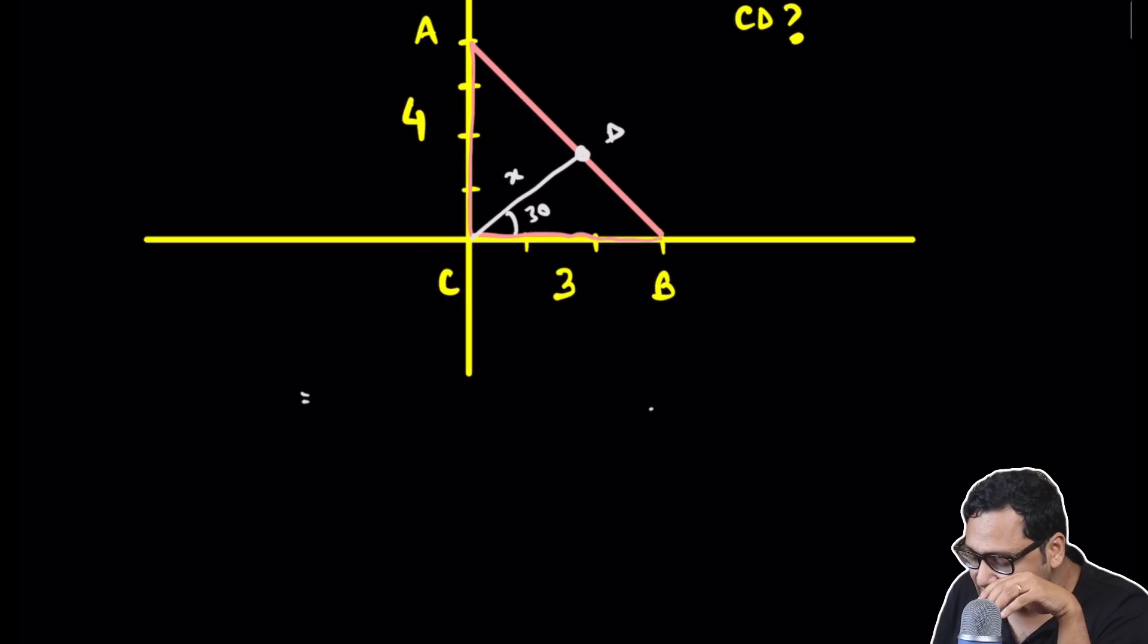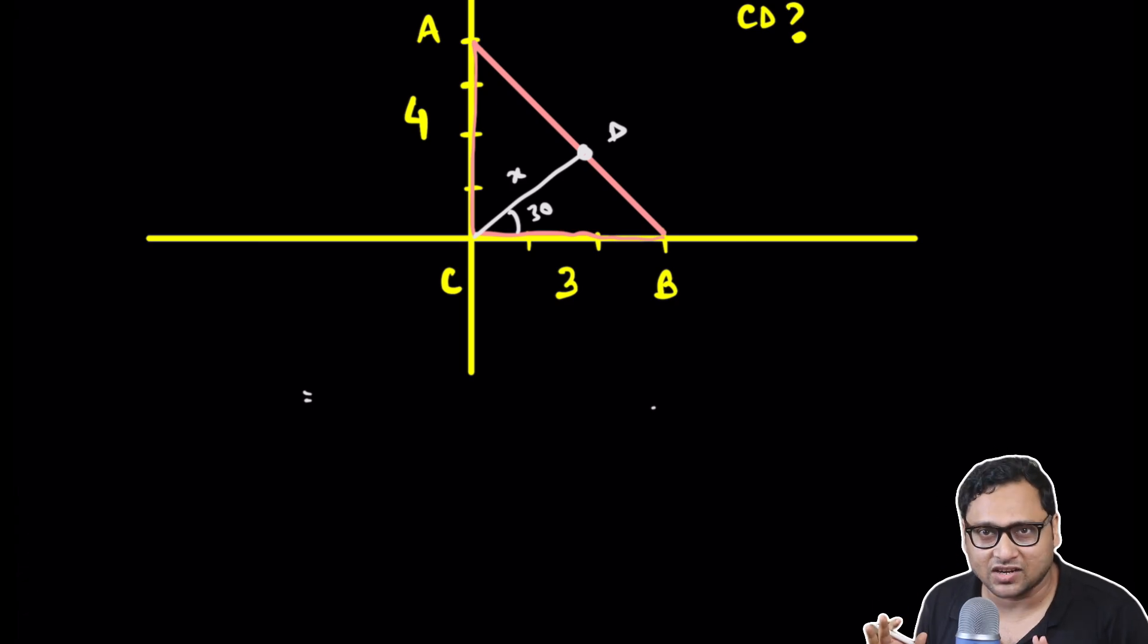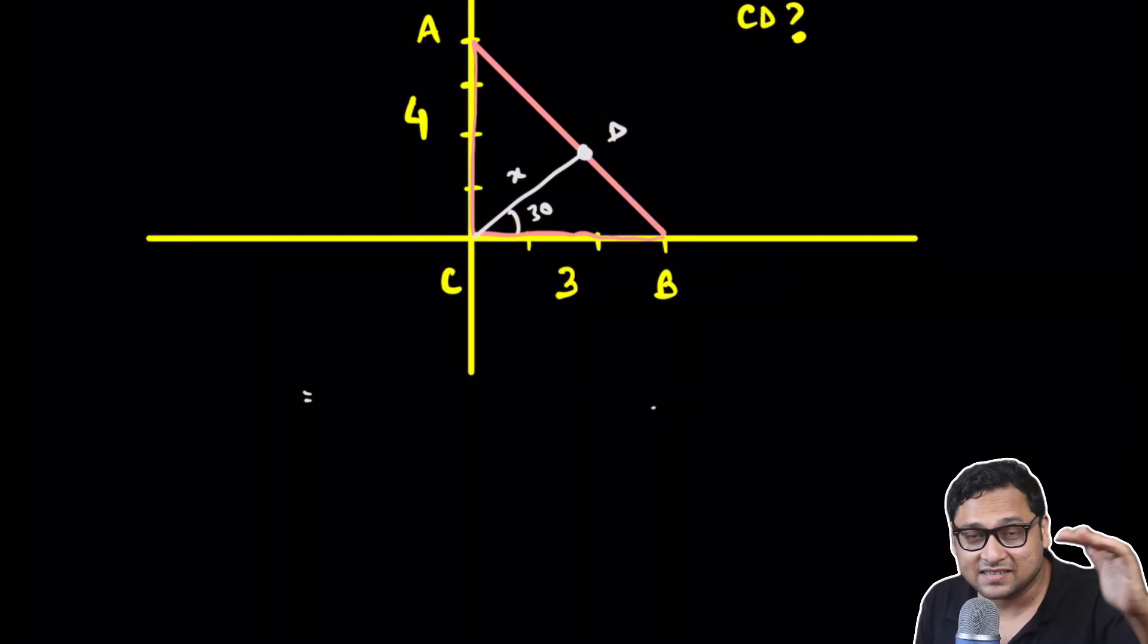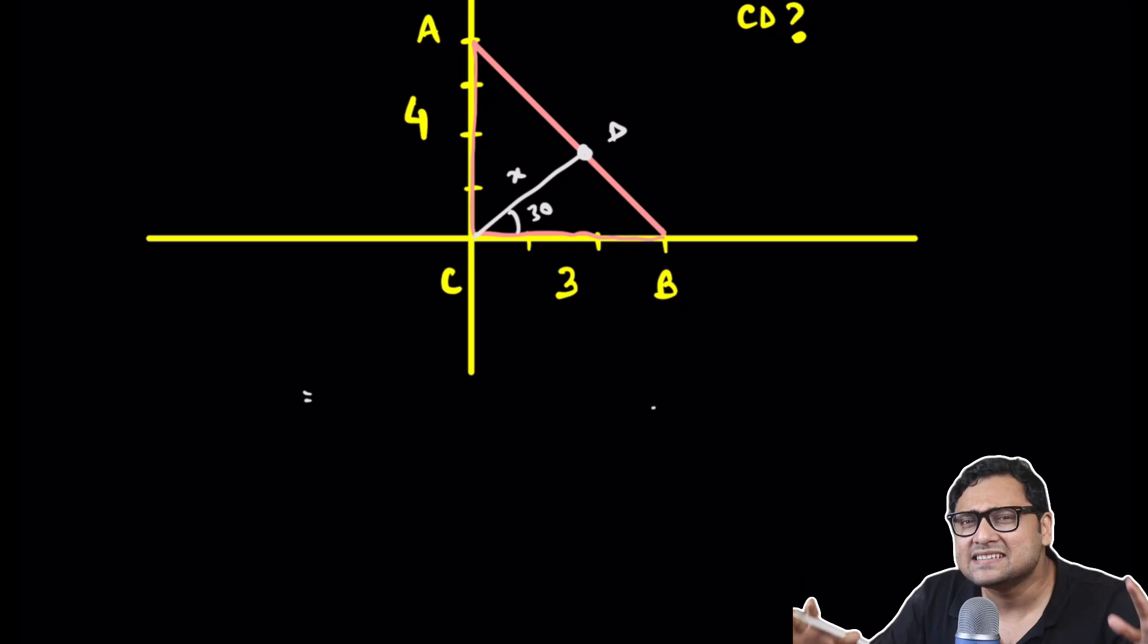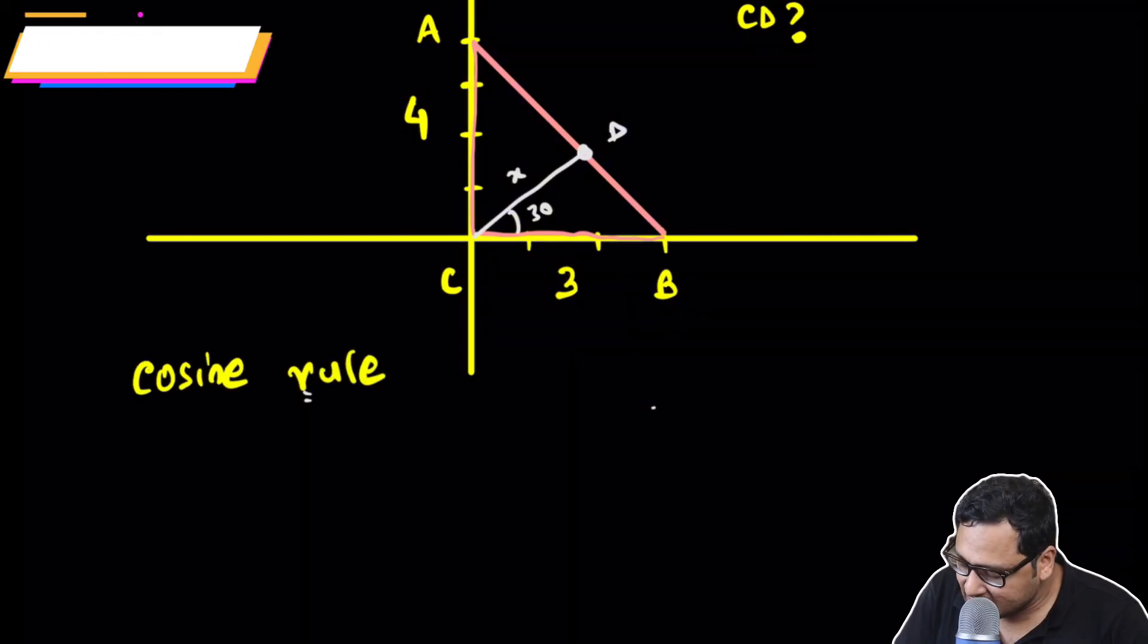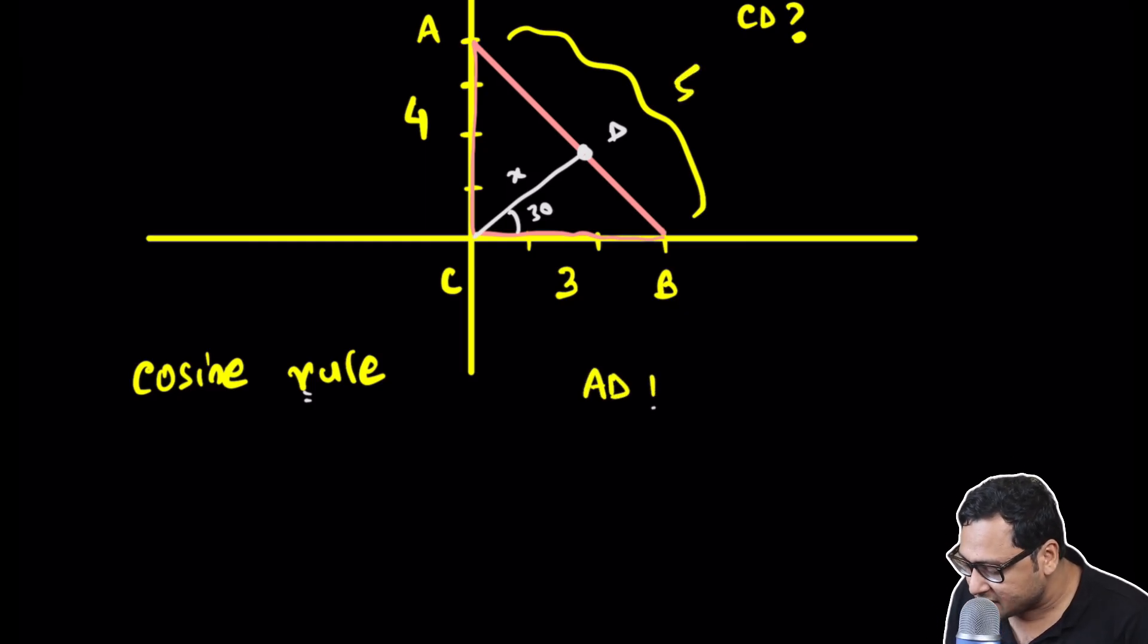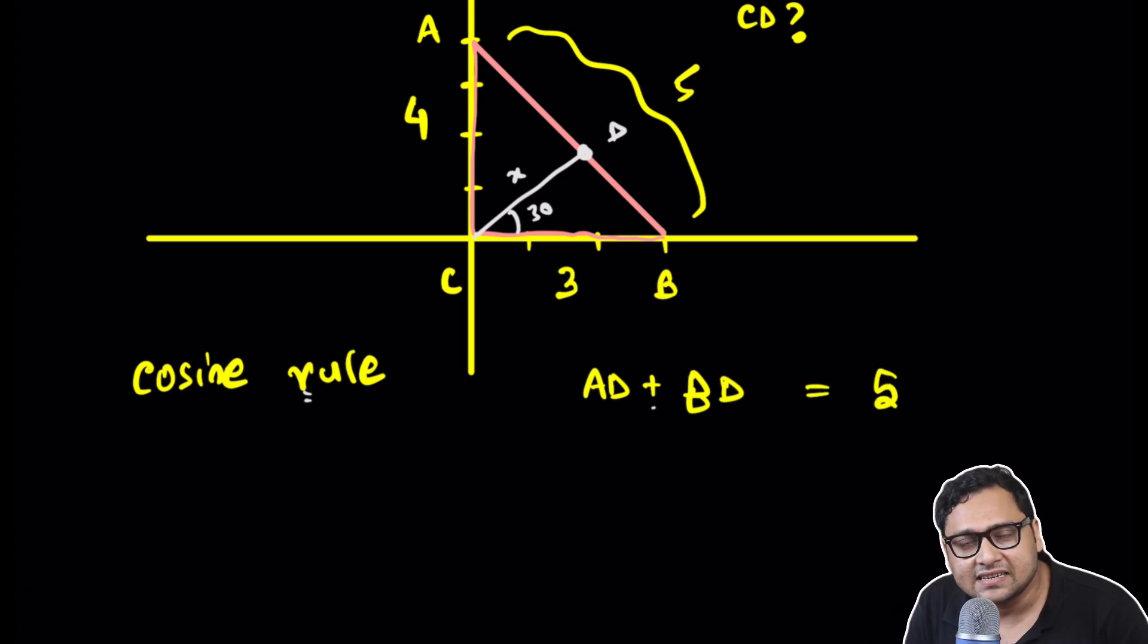When we first look at the problem, we might want to just use trigonometry and go trick bashing. This is the first method. I'll give you the second method in a minute but let's try the first method and see why it is computationally difficult. The first method is like this: I will use the cosine rule. I know that AB is 5, so AD plus BD is 5. I will calculate the value of AD, calculate the value of BD, and equate it to 5.